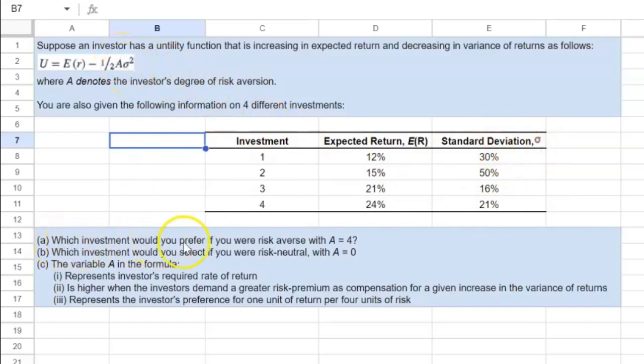The first question that is being asked is, which investment would you prefer if you were risk averse with A equal to four? So the more risk averse you are, the more you dislike risk, the higher is going to be the magnitude of A. And in this case, we're being asked what happens if A equals four?